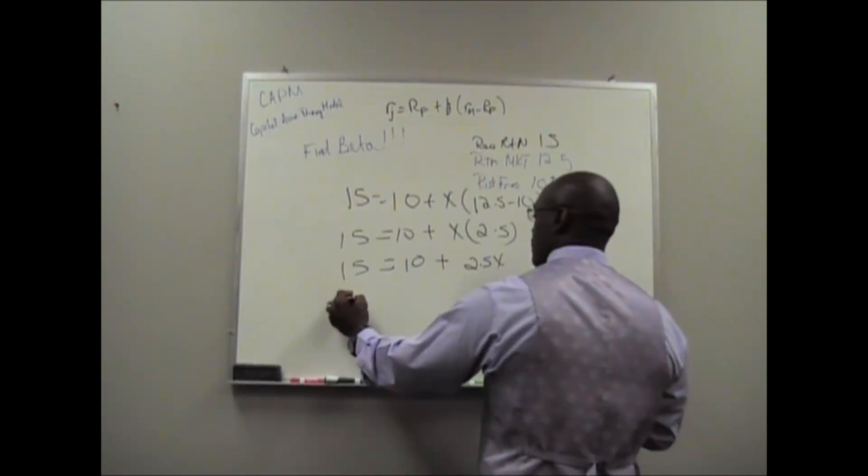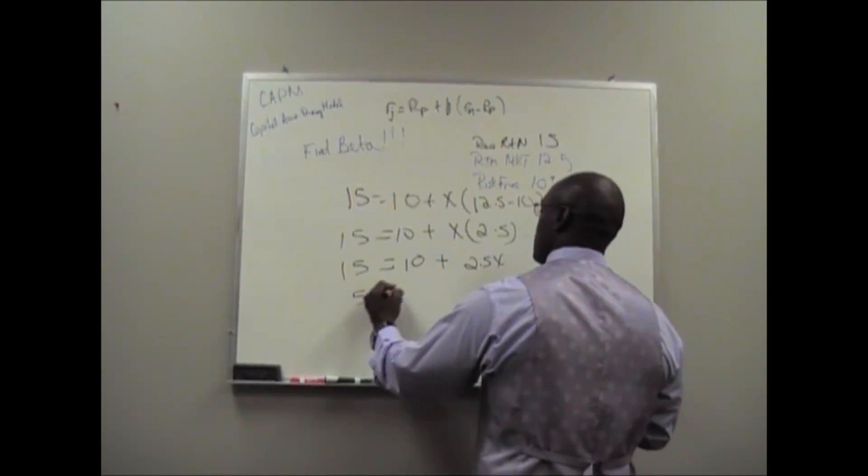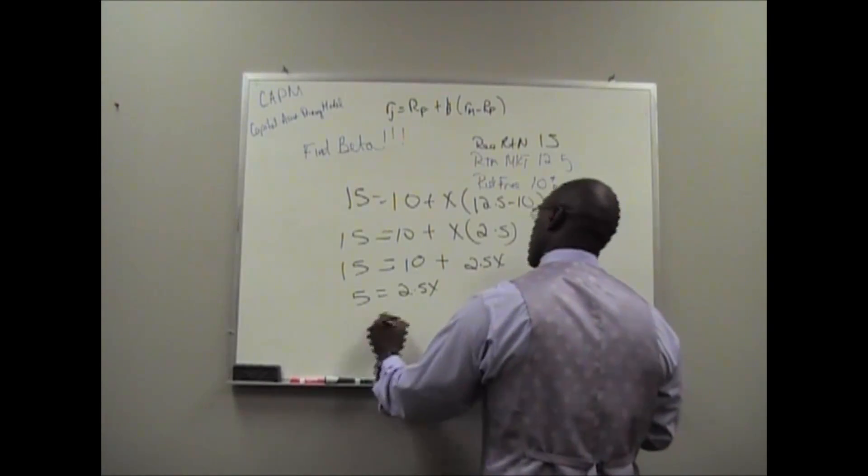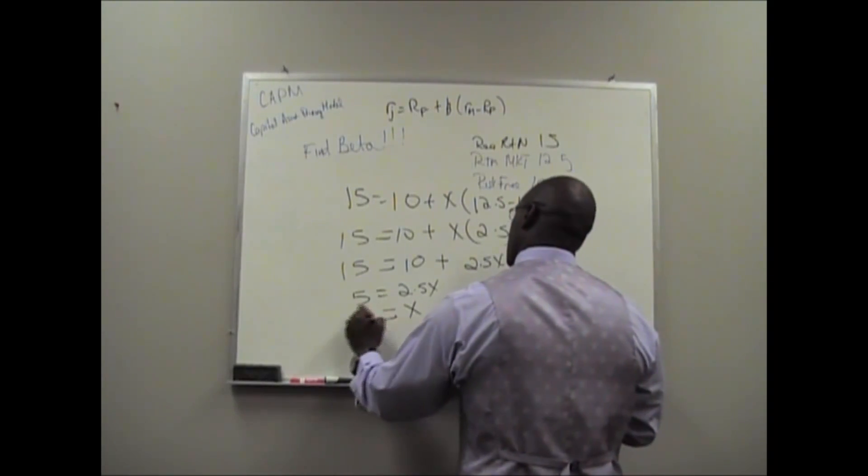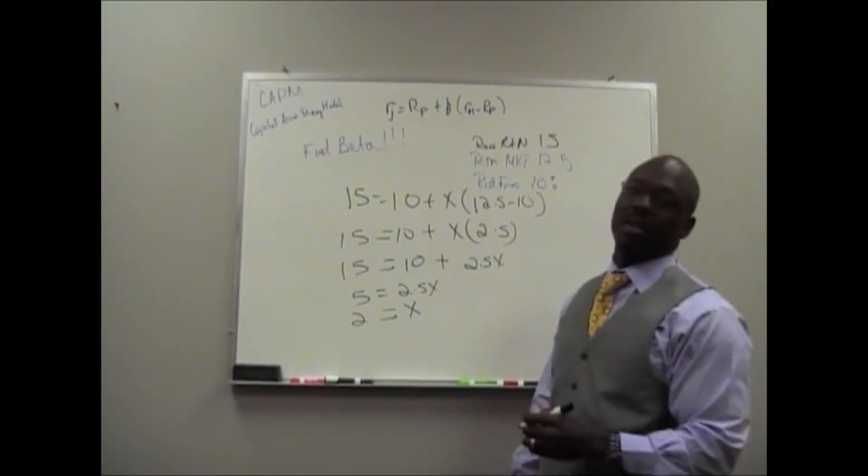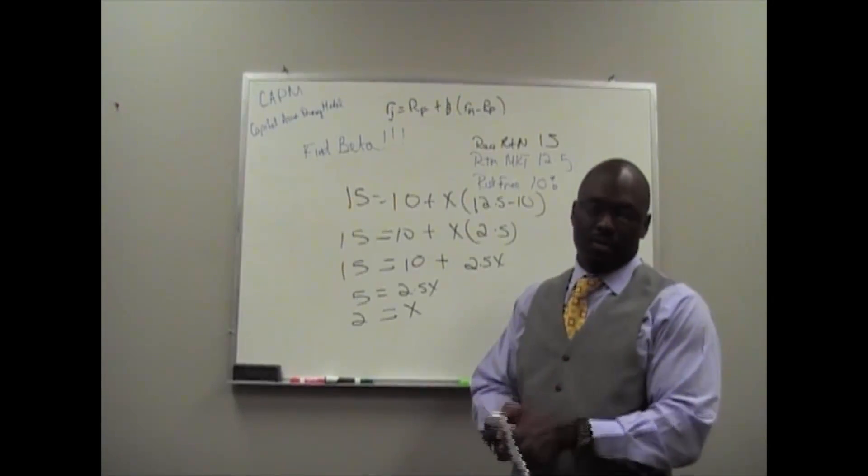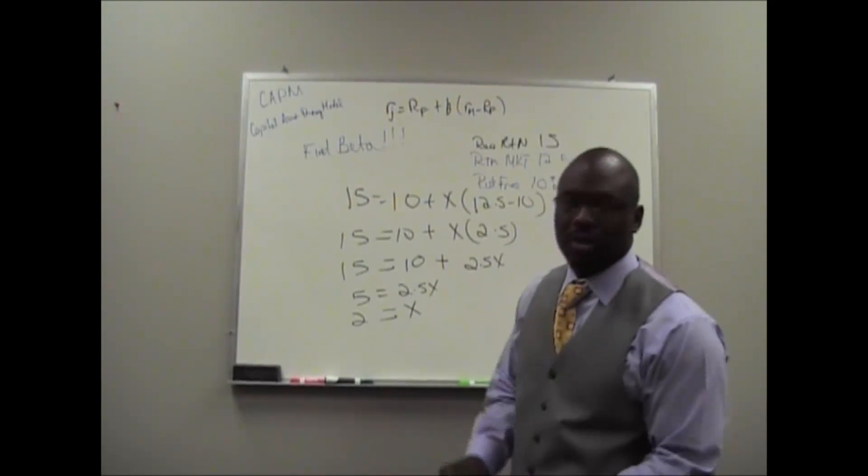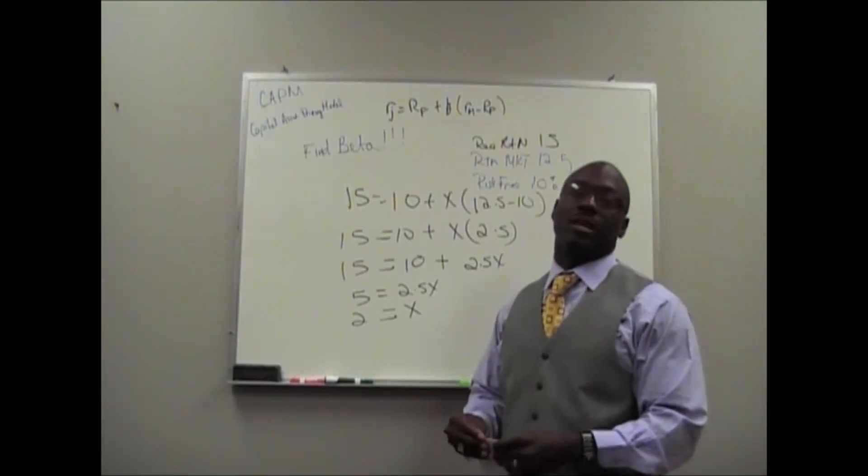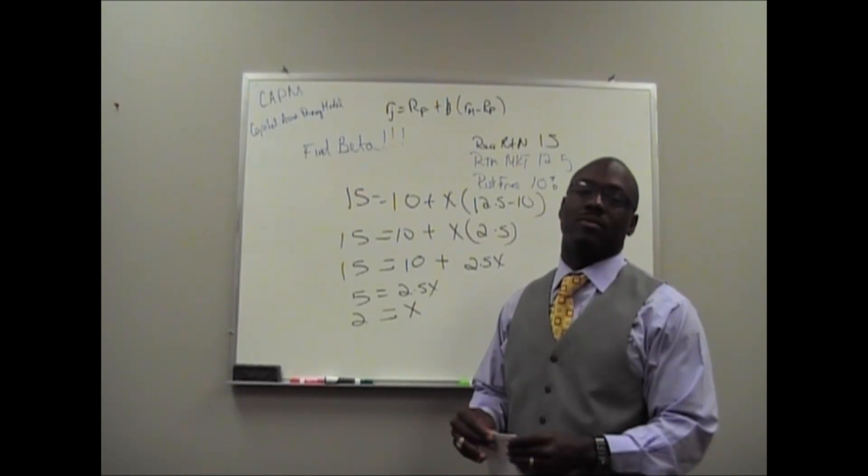Next, we move this over here to become a negative. So that would be 5 equals 2.5X. So X equals 2. So beta will equal 2. Hope that's simple enough. That concludes our section on manipulating the capital asset pricing model. See you next time.